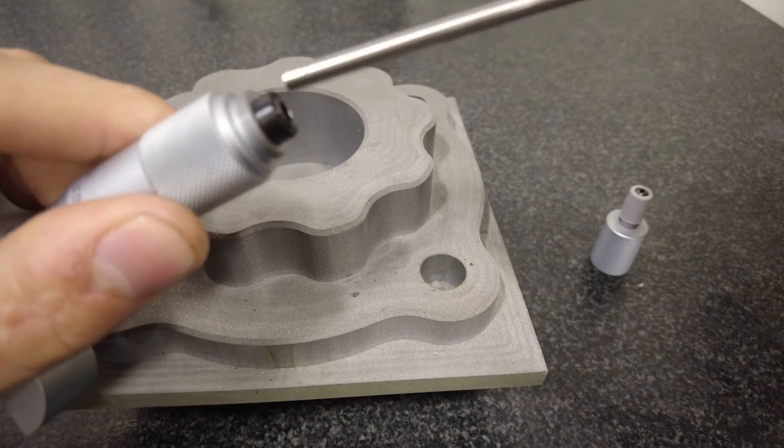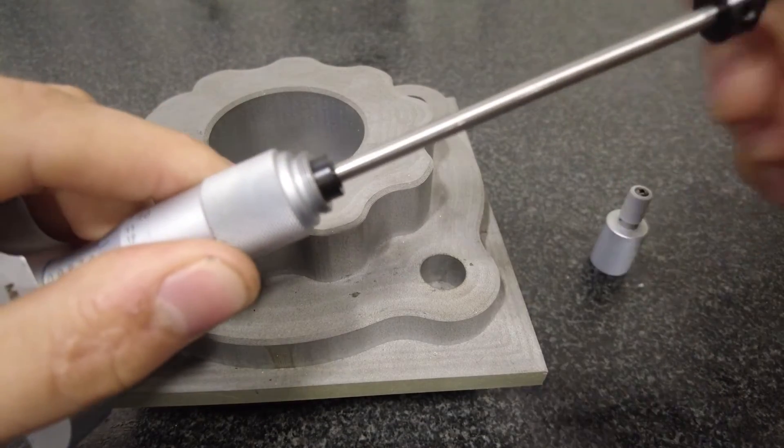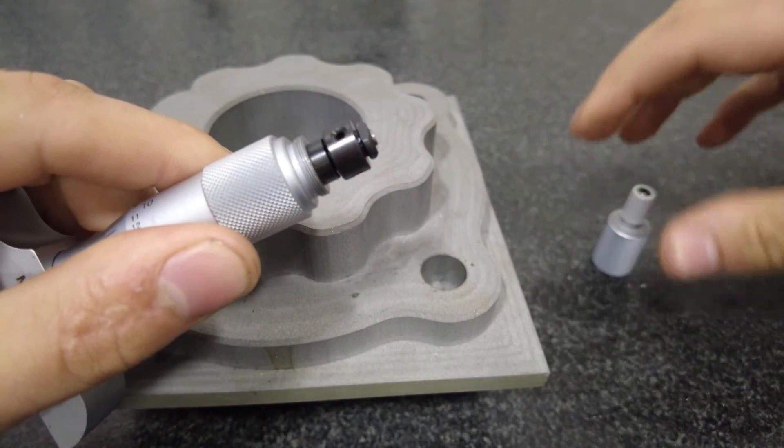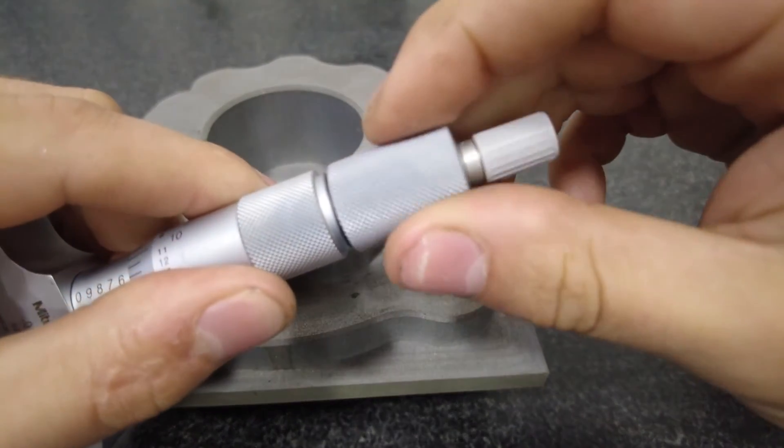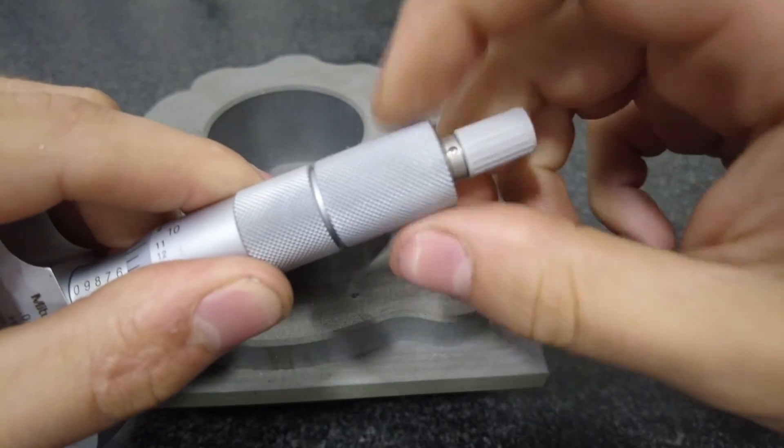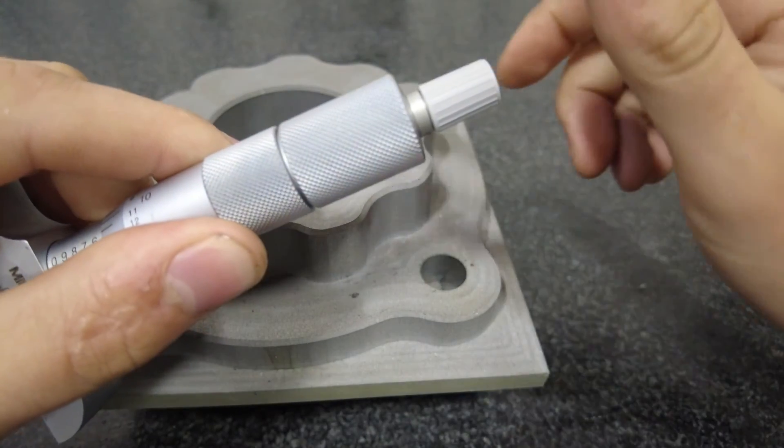Grab your one to two depth rod. Stick it in the hole just like that. Gently put it, set it in there and then tighten this up. Don't crank down on this. Just snug it up. It doesn't have to be super tight.